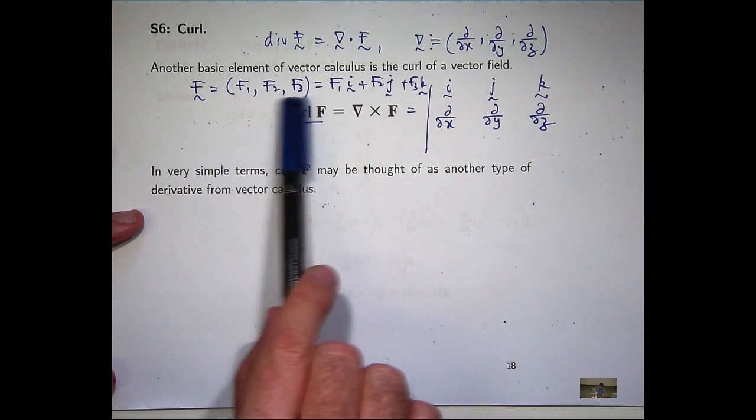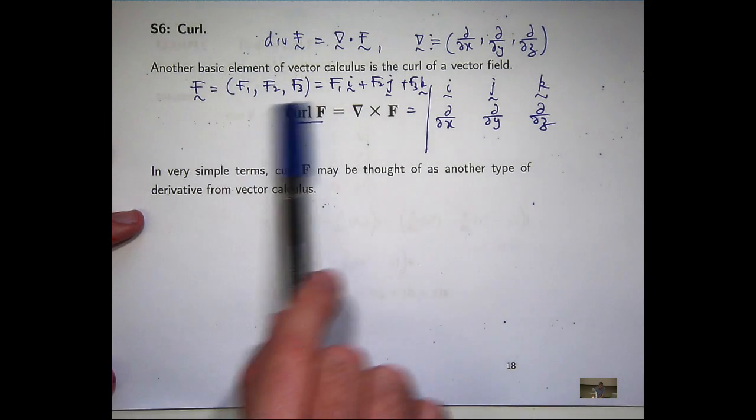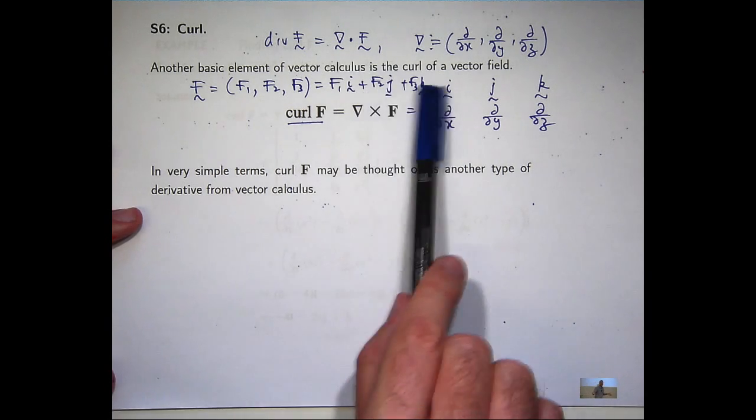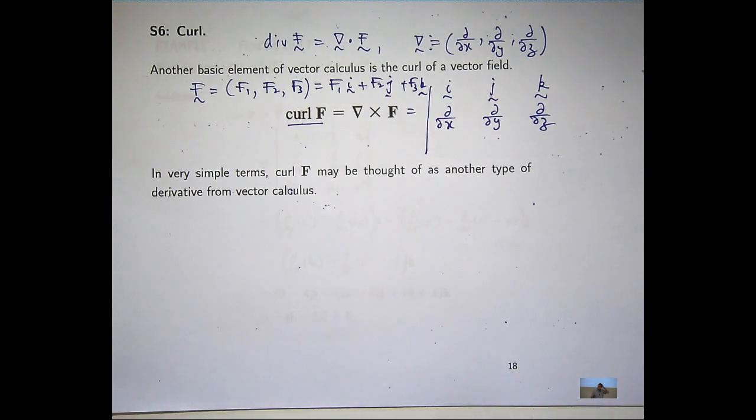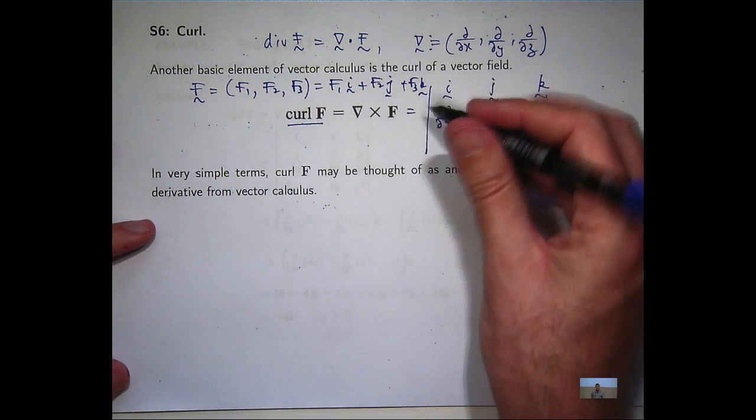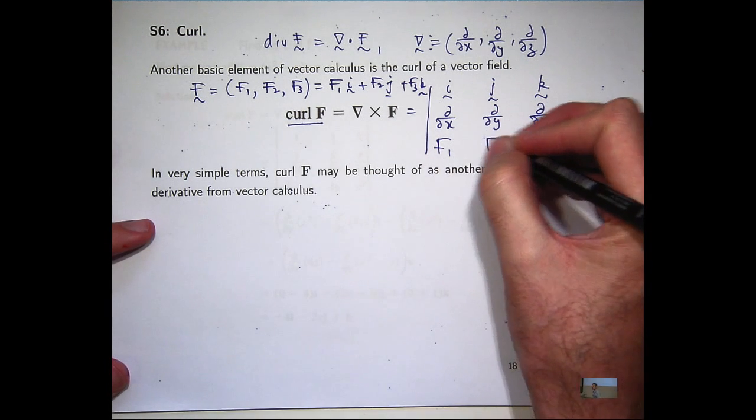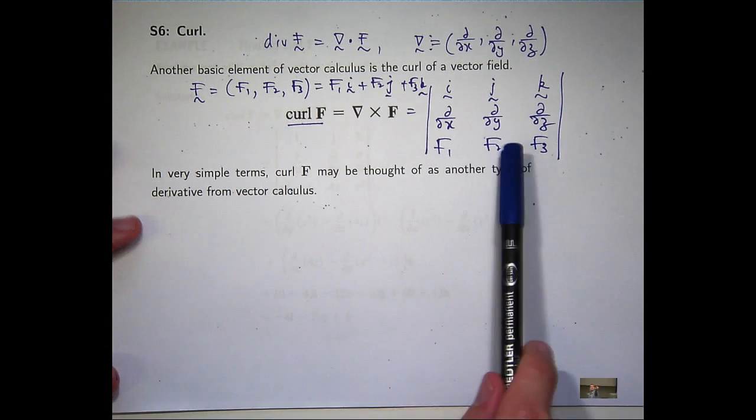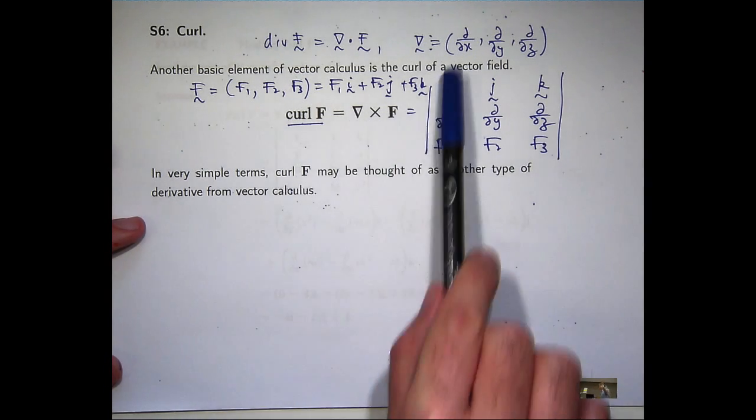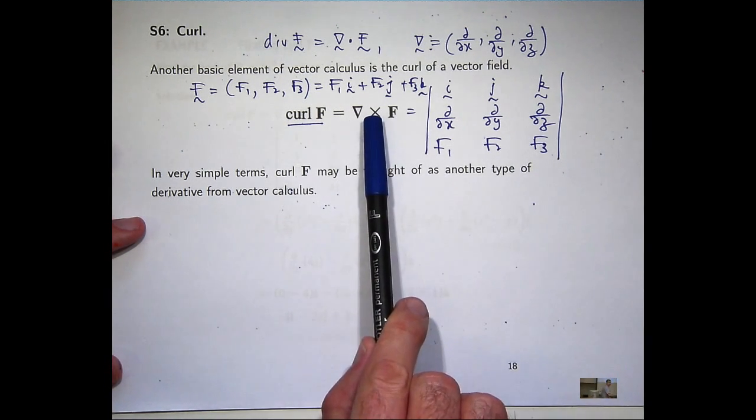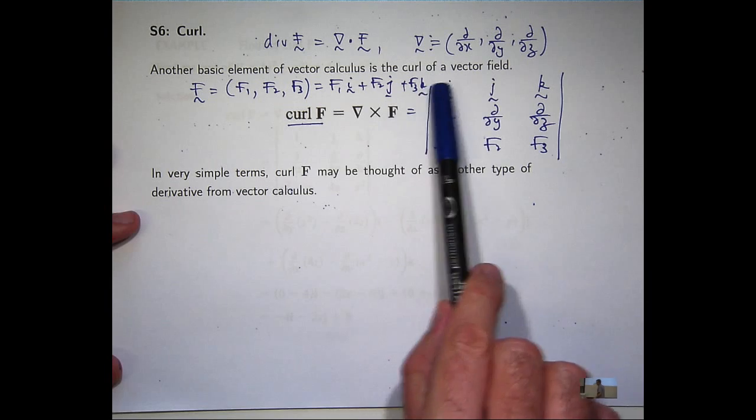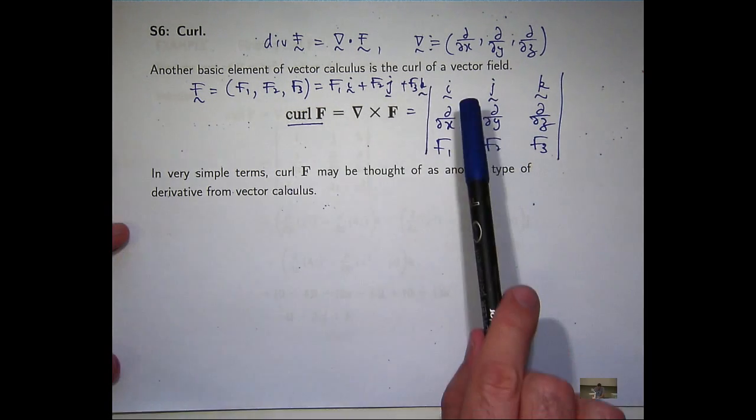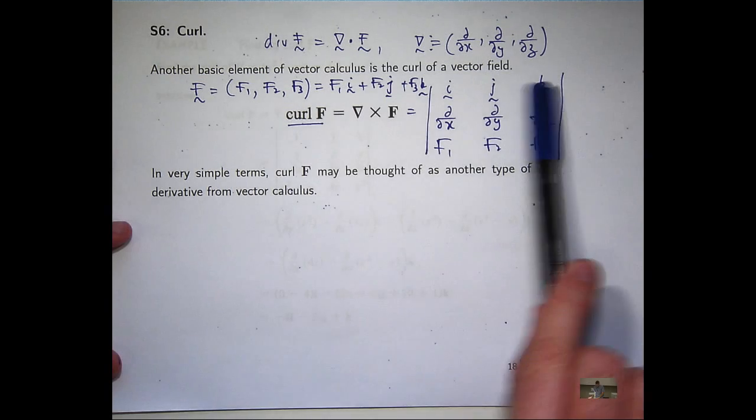Sometimes, when I write these vector fields, or vectors in general, I use this triple notation. Some people use the i, j, k. I use both, actually. Okay, so, to write out and compute the curl of a vector field, I can write it out using the del operator, and this cross product. You can think of this as a special determinant that I'm going to expand along the top row.